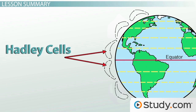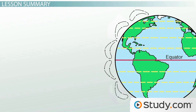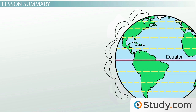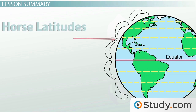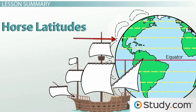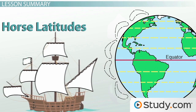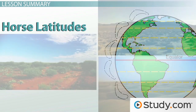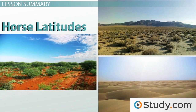The Hadley cell is home to the warm, steady breezes of the trade winds. As the air of the Hadley cell cools around 30 degrees north and south latitudes, it falls back towards Earth, creating high pressure and our next windless strip, the horse latitudes. Similar to the doldrums, the horse latitudes are a terrible place to sail, and along this strip of warm, dry air we find the world's great deserts.